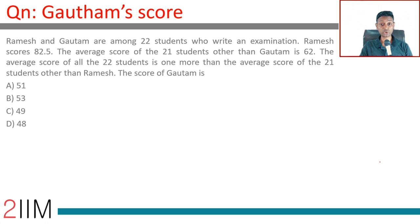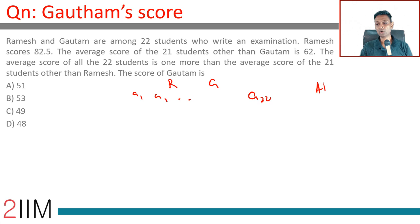Ramesh and Gautam are among 22 students who write an examination. Ramesh scores 82.5. The average score of the 21 students other than Gautam is 62. So a1, a2, till a22 — there is a Ramesh and a Gautam — so all minus Gautam is 21 into 62.